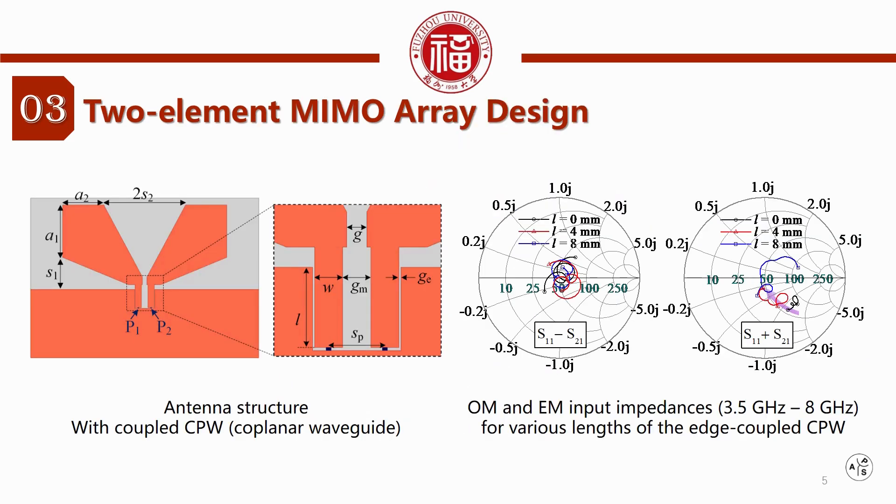This figure shows the structure of the proposed printed monopole pair, which is connected with a segment of edge-coupled coplanar waveguide. From the Smith chart, we can see that by changing the transmission line length, the even mode input impedance moves to the center of the chart.